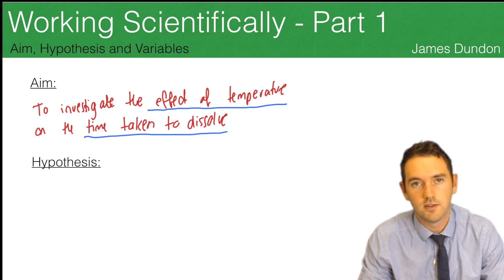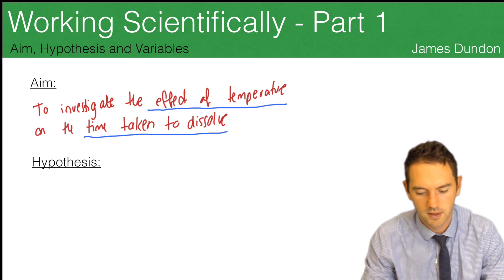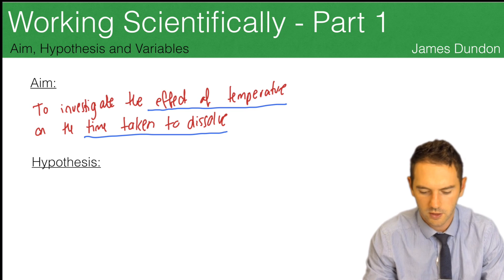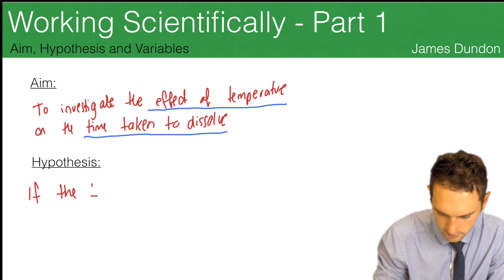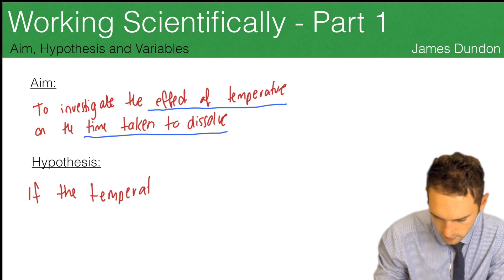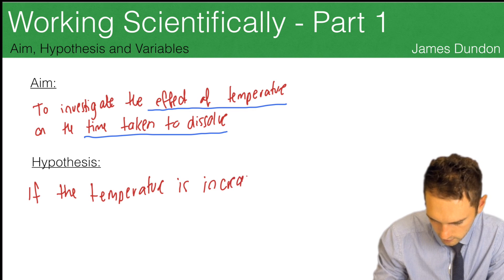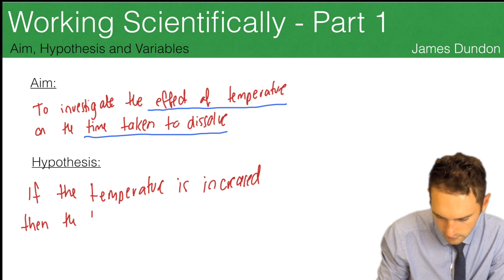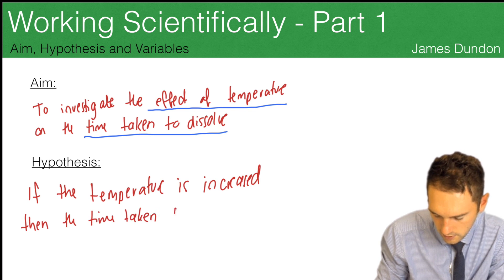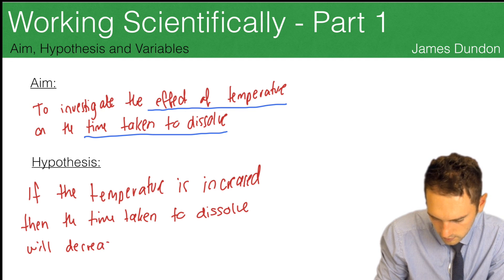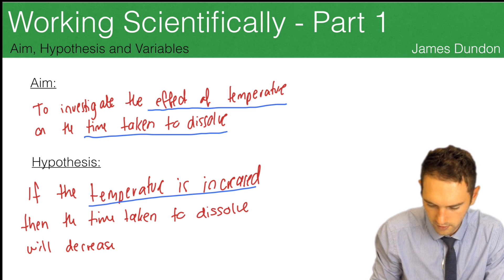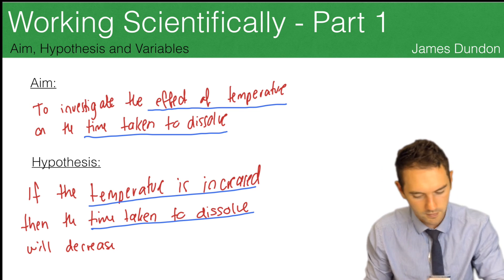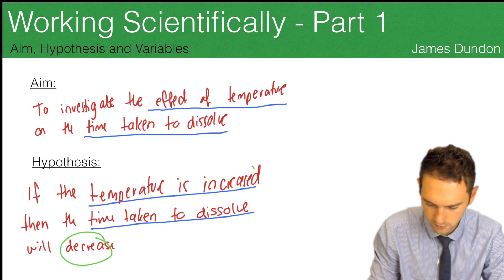Our hypothesis is slightly different — we're looking for a generalisation or a testable prediction that links those two variables together. If I change my independent variable, how will my dependent variable change? So we write: if the temperature is increased, then the time taken to dissolve will decrease. It's the connection between our independent and dependent variable — temperature is our independent variable, and time to dissolve is our dependent variable, and we state how they are linked together.